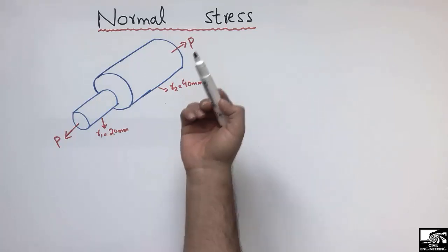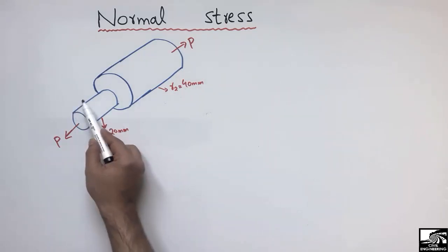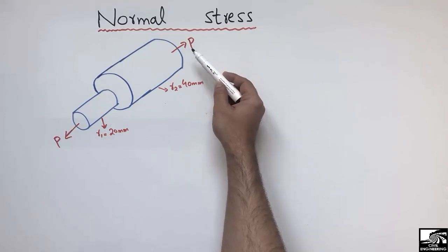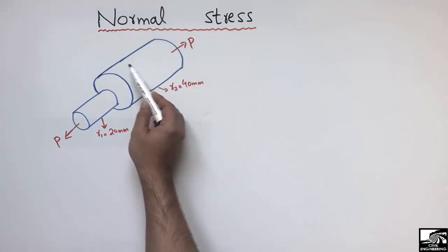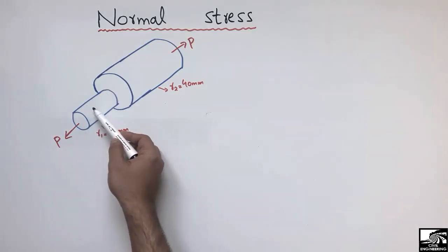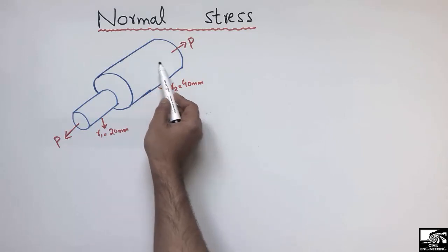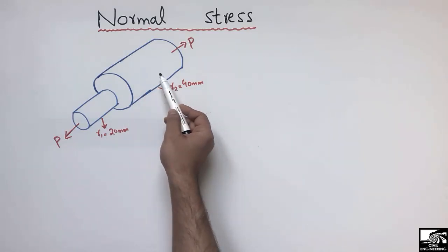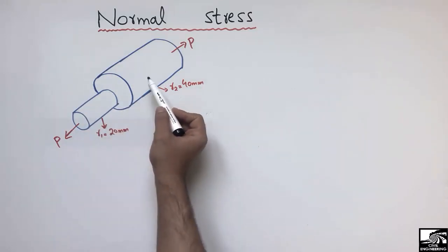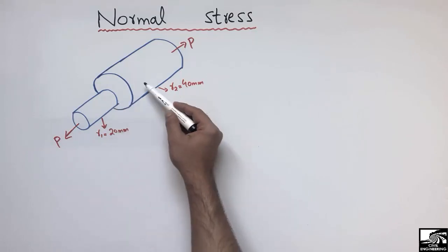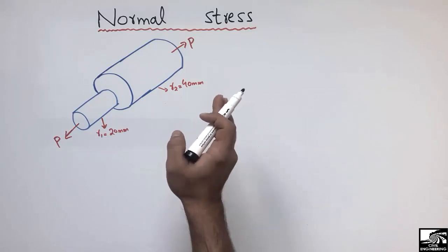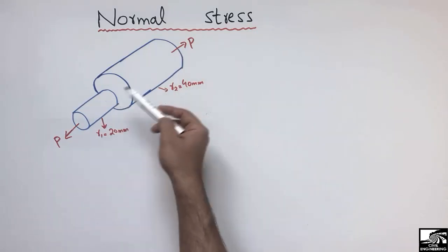In this lecture we are going to find the normal stresses created inside an object with different cross-sections. You can see here one small cylinder and one big cylinder, and both cylinders are subjected to a force P. There are stresses created inside this object with different cross-sections. The smaller cross-section will carry some normal stresses and the bigger cross-section will also take some normal stresses, but they will be affected differently because of their geometry.